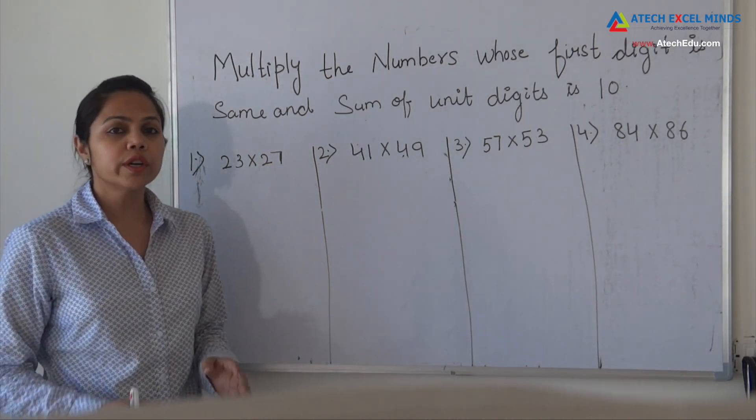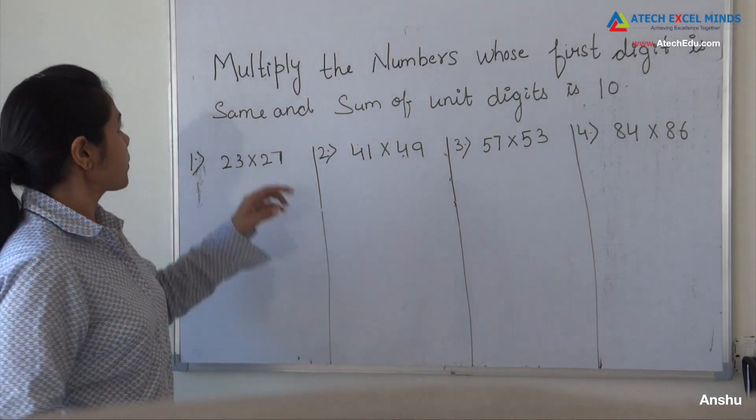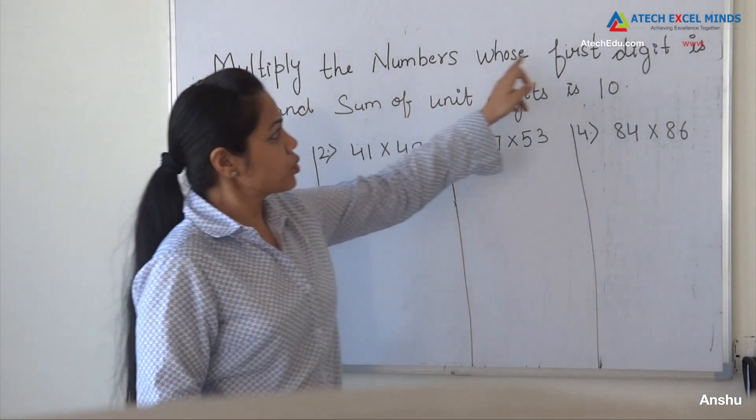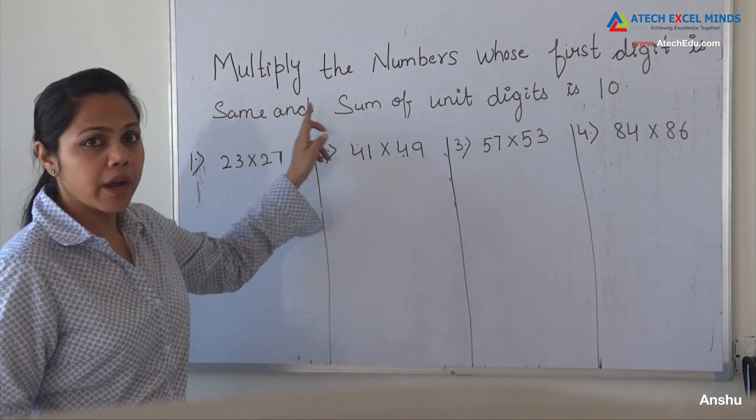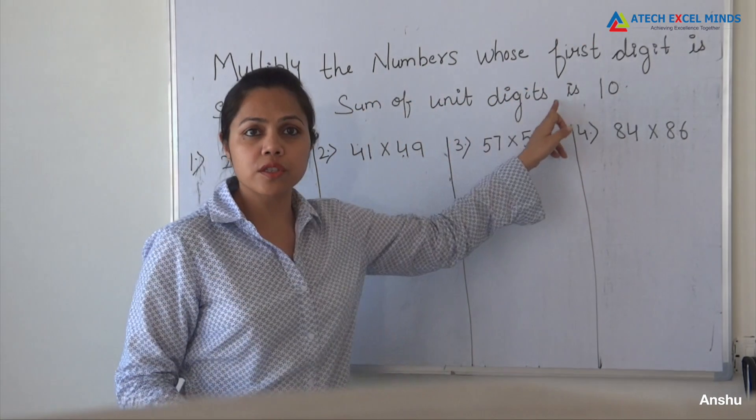Hello friends, I am going to tell you one trick of Vedic Maths today. Multiply the numbers whose first digit is same and the sum of unit digits is 10.